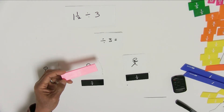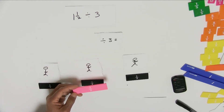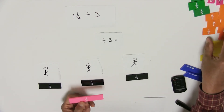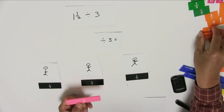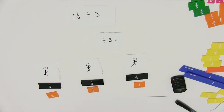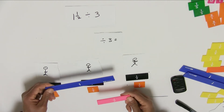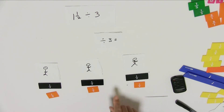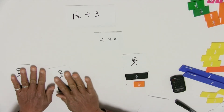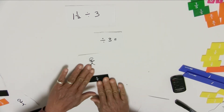Now I've got to share out the remaining half equally. In order to do that, I have to cut this up into three equal pieces. I have shared it out equally — I have shared out 1 and ½ equally to three people. The answer is what one whole person receives, so I'm only interested in what this one whole person receives and I'll get rid of all the others.